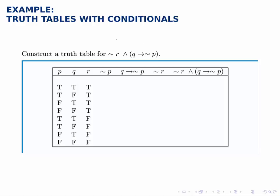to build up to this final statement, we notice that the negations we have are not p and not r, so we have columns for not p and not r.